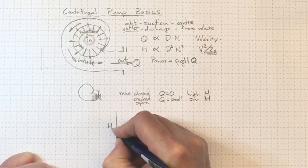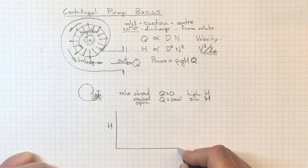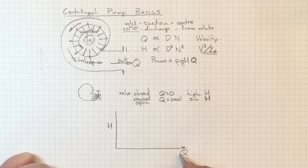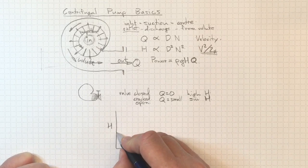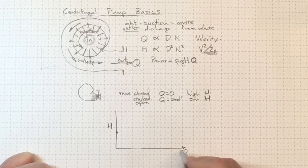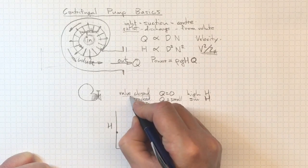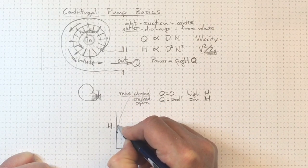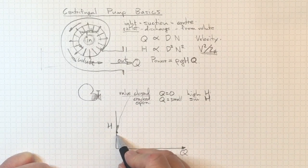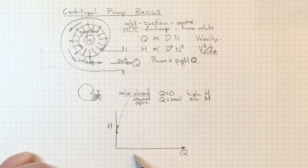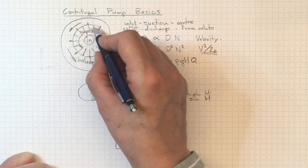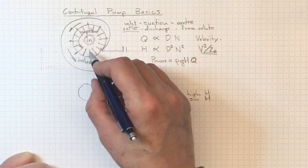If we looked at head versus flow, and this is the classic curve that we'll draw for any pump situation, then when we start here, we may have quite a high head and no flow. That's because we've got our valve closed. So that's that location there. And as we open the valve a little bit, we will get some flow going out. So we'll move up along the Q axis.